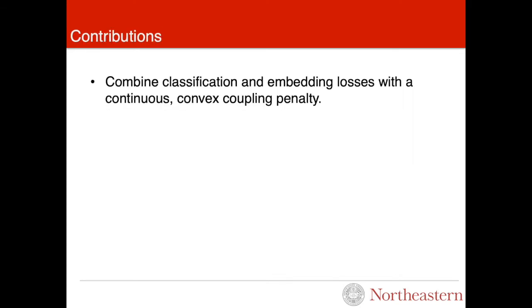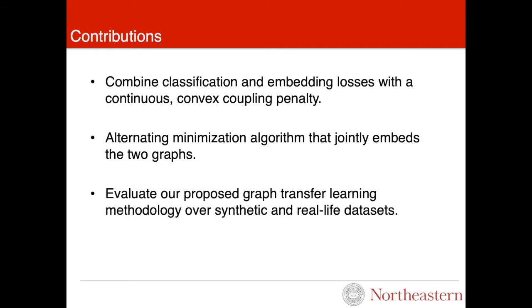In this work, we combine classification and embedding losses with a continuous convex coupling penalty motivated by tractable graph distances. This allows us to solve in continuous domain without pre-alignment. We propose and implement an alternating minimization algorithm that jointly embeds the two graphs. We extensively evaluate our proposed graph transfer learning methodology over several synthetic and real-life datasets.